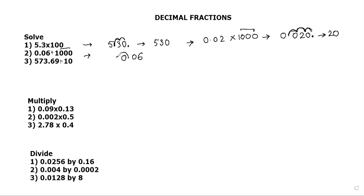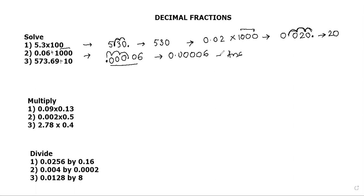Move the decimal left: one, two, and three. So the decimal moves here. The answer is 0.00006. The decimal has moved three places — one, two, three — and the answer is 0.00006.